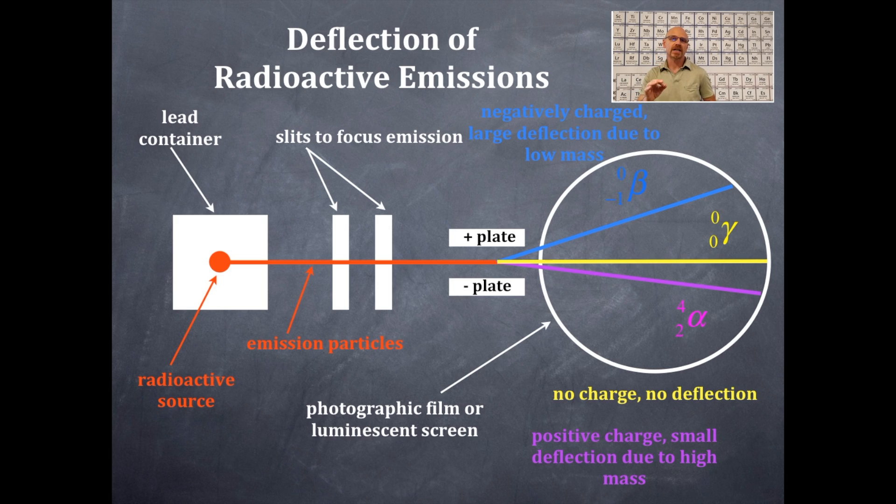These are the deflections of the three basic types of radioactive decay: alpha, beta, and gamma. Remember, beta particles are negative and they go towards the positive plate with large deflection. Gamma particles don't have a charge and they go straight through. Alpha particles are relatively heavy and positively charged. Therefore, their deflection is less because they're very heavy.